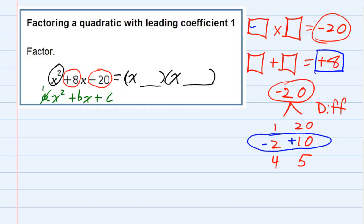So just checking here, negative 2 times a positive 10 multiplying gives me negative 20. Negative 2 plus a positive 10 gives me a positive 8. So that's our combination.